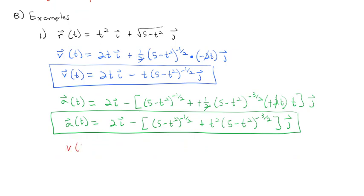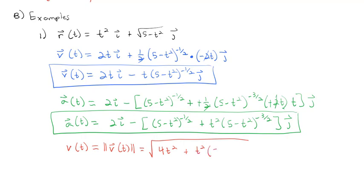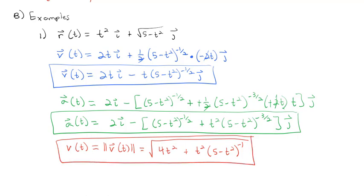We can also find our speed. Speed is v(t), the magnitude of the velocity vector — the square root of each component squared. We get √(4t² + t²(5 − t²)^(−1)), since squaring the negative one-half power causes the exponent to become negative one. That expression represents the speed of our particle described by r(t).